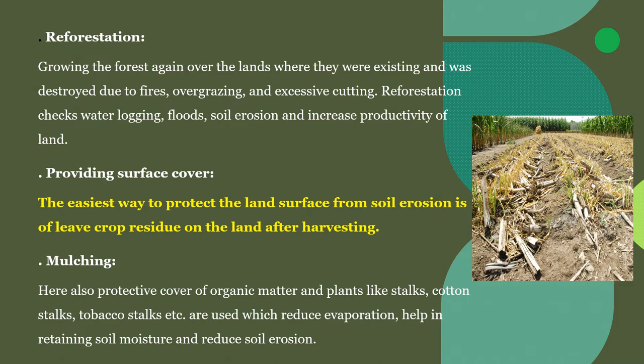Mulching is a protective cover of organic matter. Plant stalks of cotton, tobacco, and mustard are left behind after harvesting on the land because they have good soil-holding capacity and protect the soil from erosion.